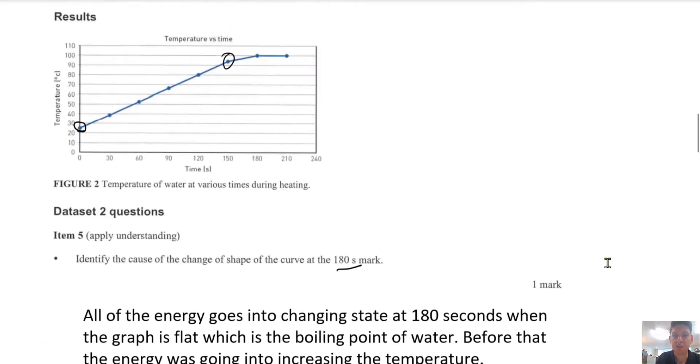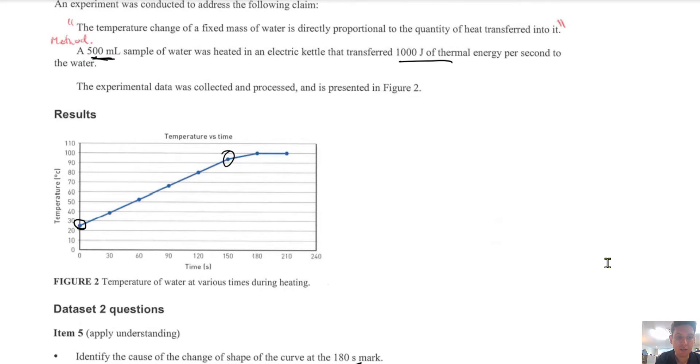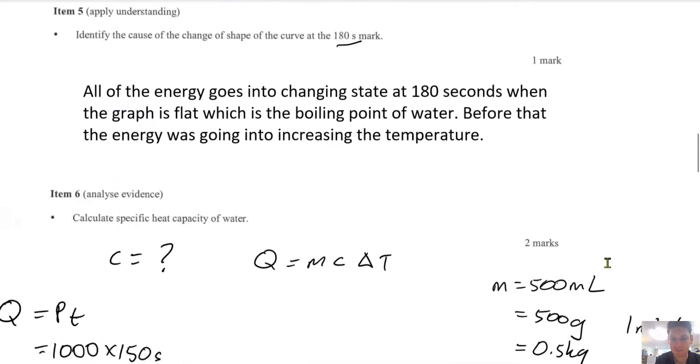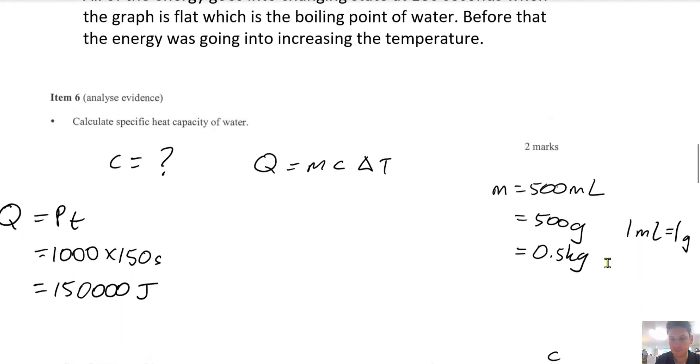Next, we need the change in temperature. So the constant steady upward change in temperature goes from 25 to 95. And then it flattens out at 95. So that's delta T. Final temperature minus initial, which is 95 minus 25.